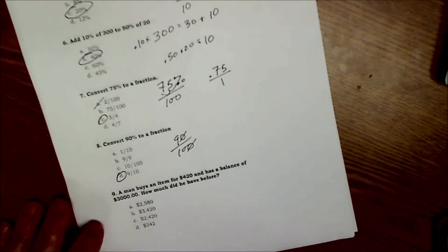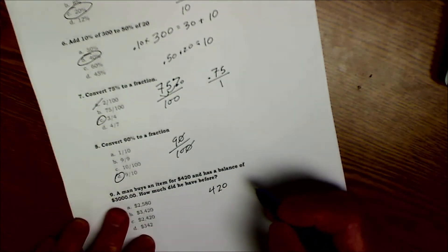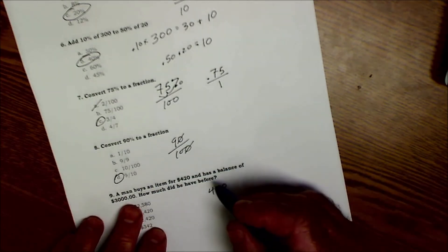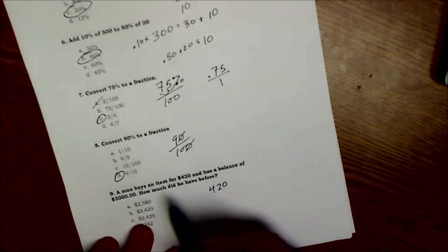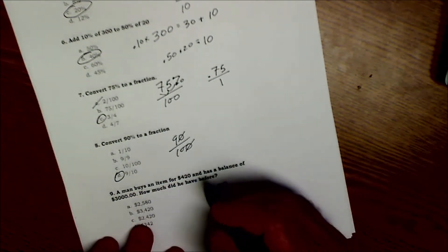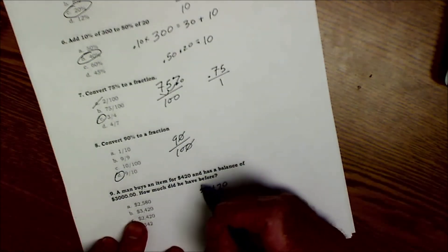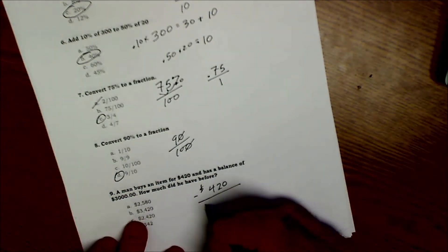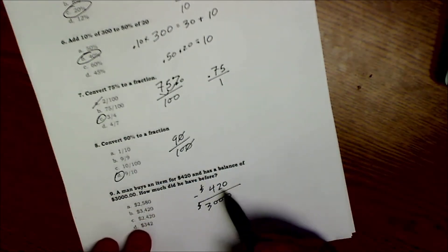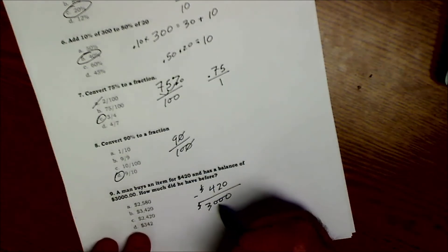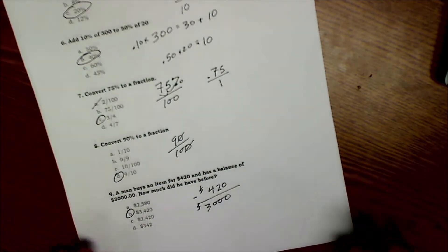All right, moving right along. Number nine: a man buys an item for $420 and has a balance of $3,000. How much did he have before? So this is actually kind of decoding the math - I mean sorry, decoding the English. A man buys an item for $420 and has a balance of $3,000, so that means after, like how much is it minus $420 to give me $3,000 afterwards? So it's not going to be $3,000 minus $420, but what minus $420 gives you the $3,000? So $3,420 minus $420 gives you the $3,000.